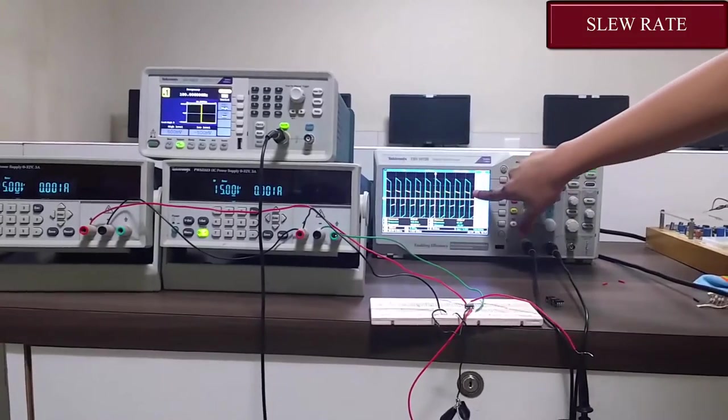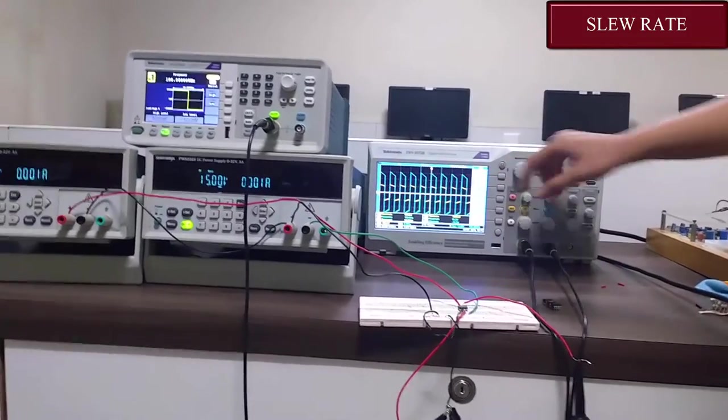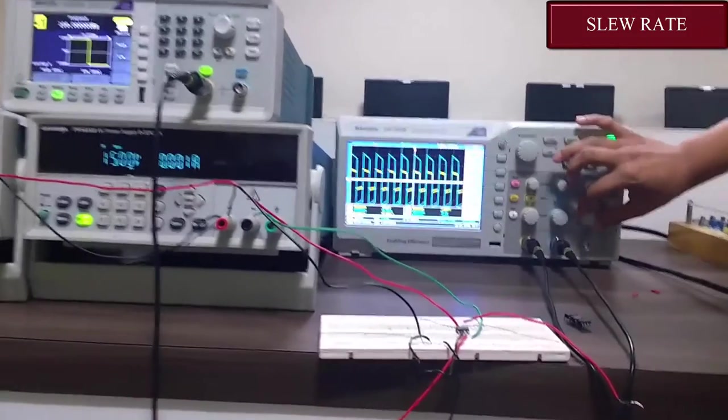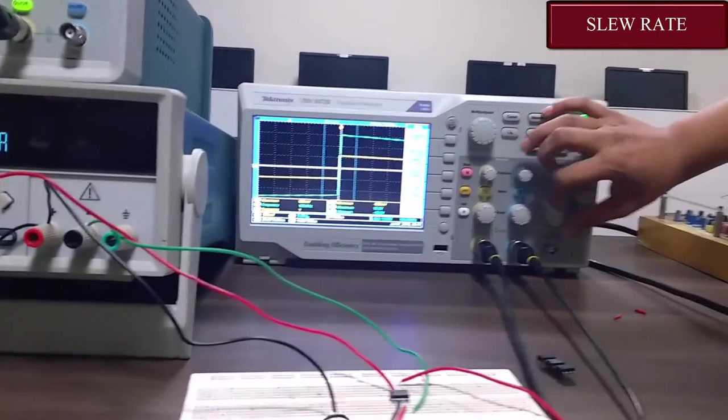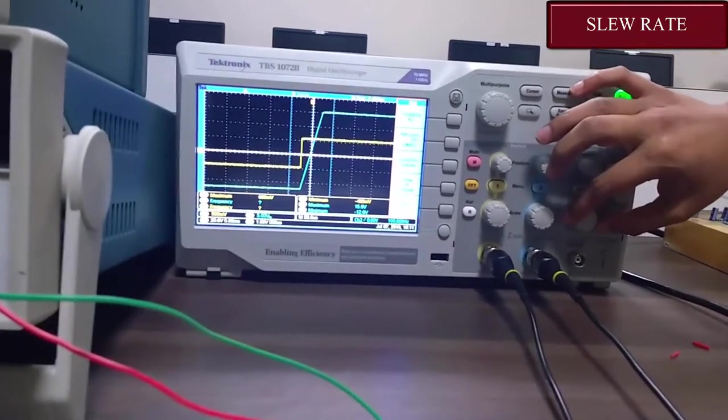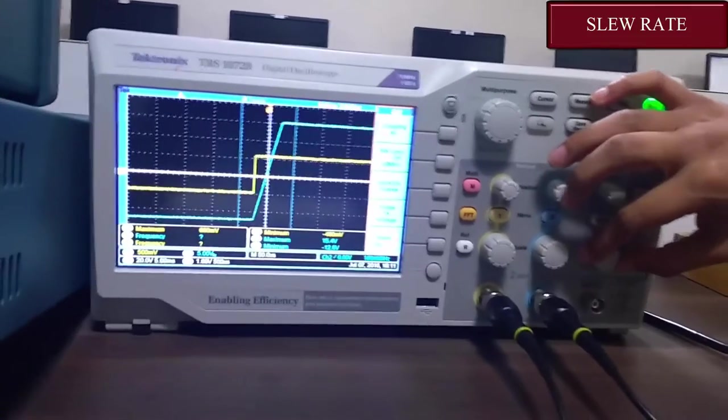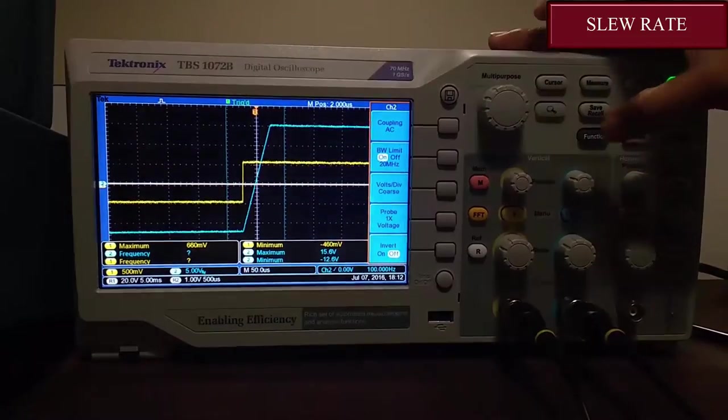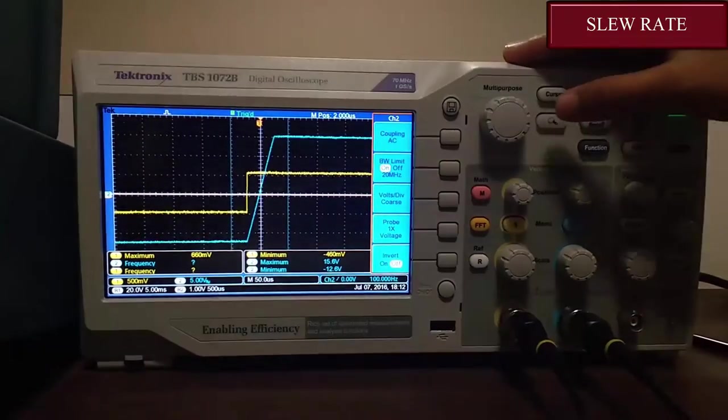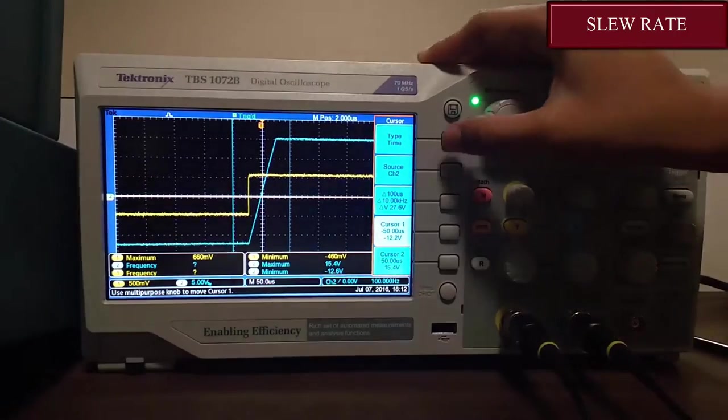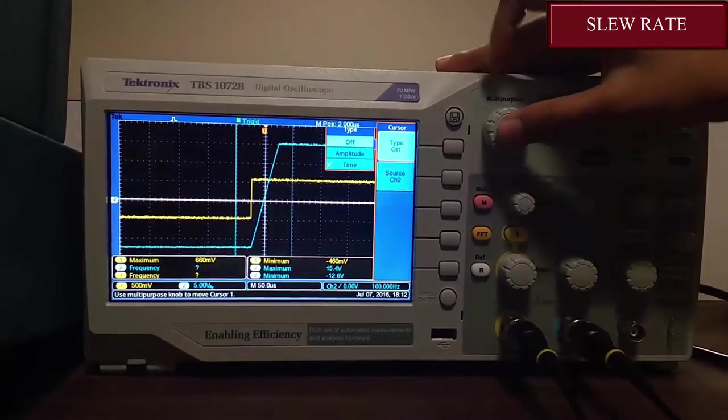This is what we get. The blue square wave indicates the output. Now let's see what its slew rate is. We know that slew rate is change in voltage upon change in time. Now in order to check its slew rate we are using this cursor and setting it for the type as time.